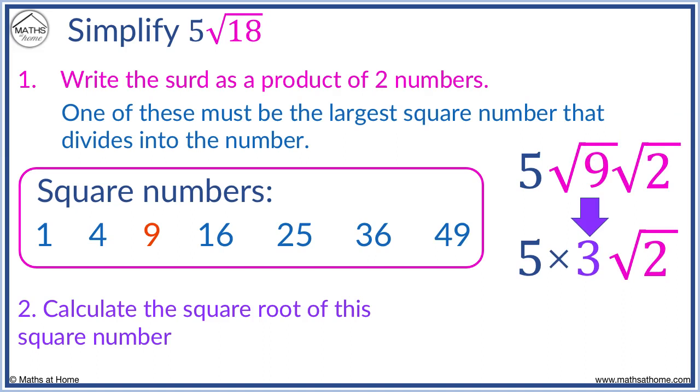Now we can multiply 5 by 3 to get 15. Then we have root 2. 5 root 18 simplifies to 15 root 2. The process is the same as before but we multiply by 5.